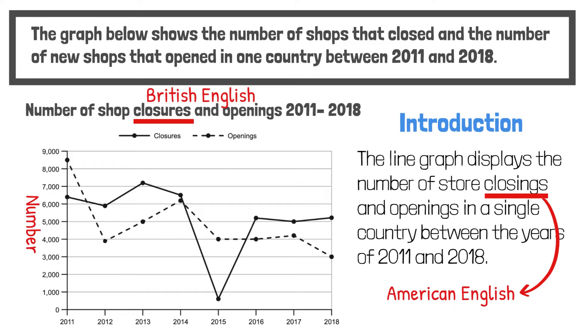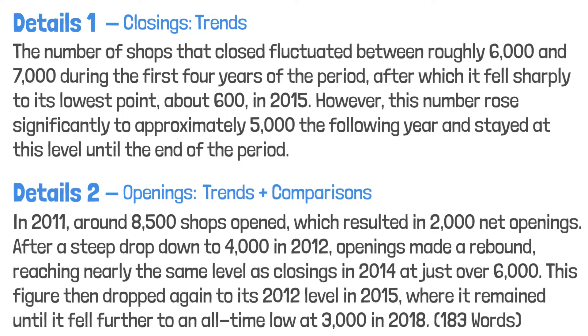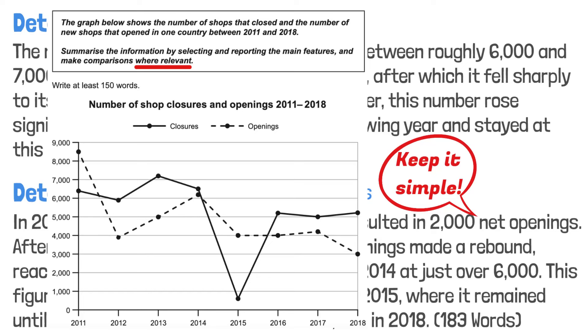Here's the entire essay. I really recommend separating the two lines into two different paragraphs — your essay will be much easier to follow this way. Keep your details paragraph 1 simple: a pure description of the trends of one line. If you want to compare the two lines, do it in details paragraph 2. Remember, you don't need to make a ton of comparisons. The question asks to make comparisons where relevant — in fact, if you make too many comparisons, your essay will become messy. That's all for this video. If you're interested in learning how to describe trends, check out my other video where I show you 5 different ways to describe trends.